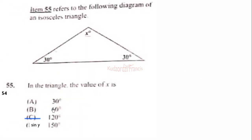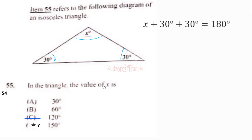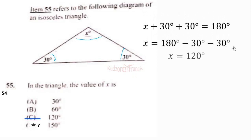Item 55 refers to a diagram of an isosceles triangle. The interior angles are 30, x, and 30, and they must sum to 180 degrees. So x equals 180 minus 30 minus 30, which gives x equals 120 degrees. The correct answer is option C.